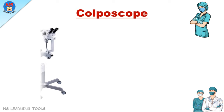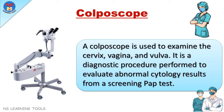Colposcope. A colposcope is used to examine the cervix, vagina, and vulva. It is a diagnostic procedure performed to evaluate abnormal cytology results from a screening pap test.